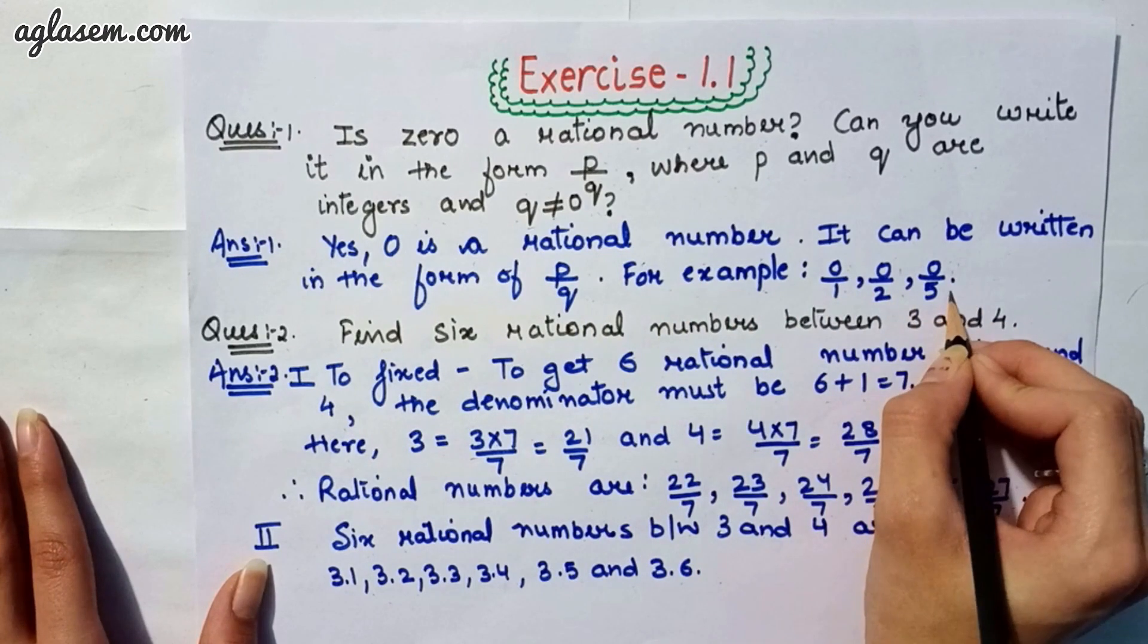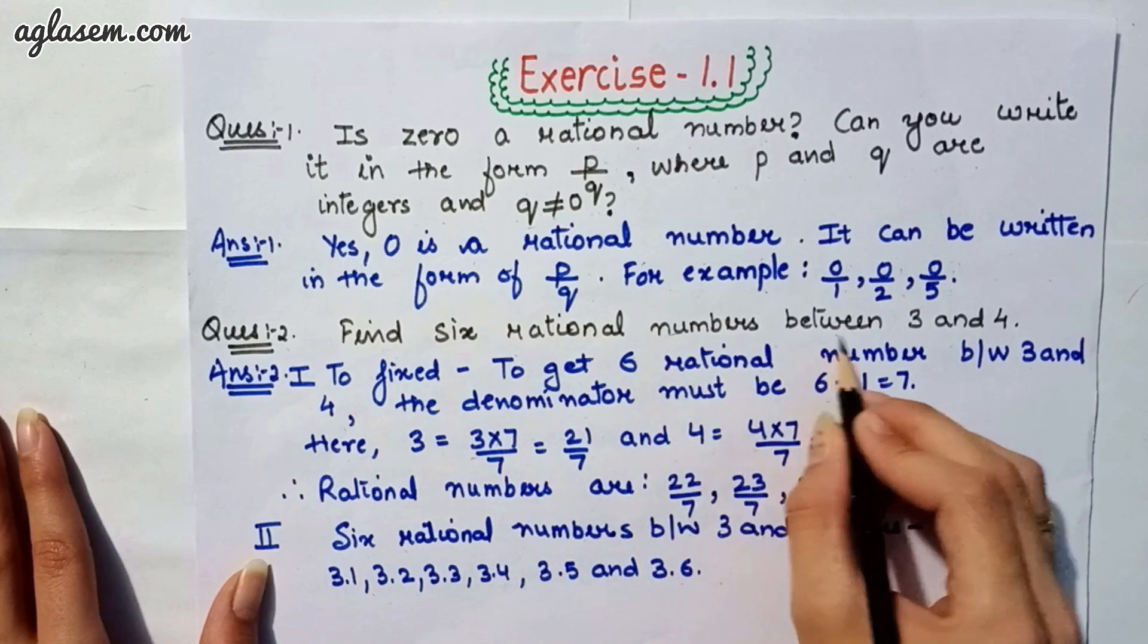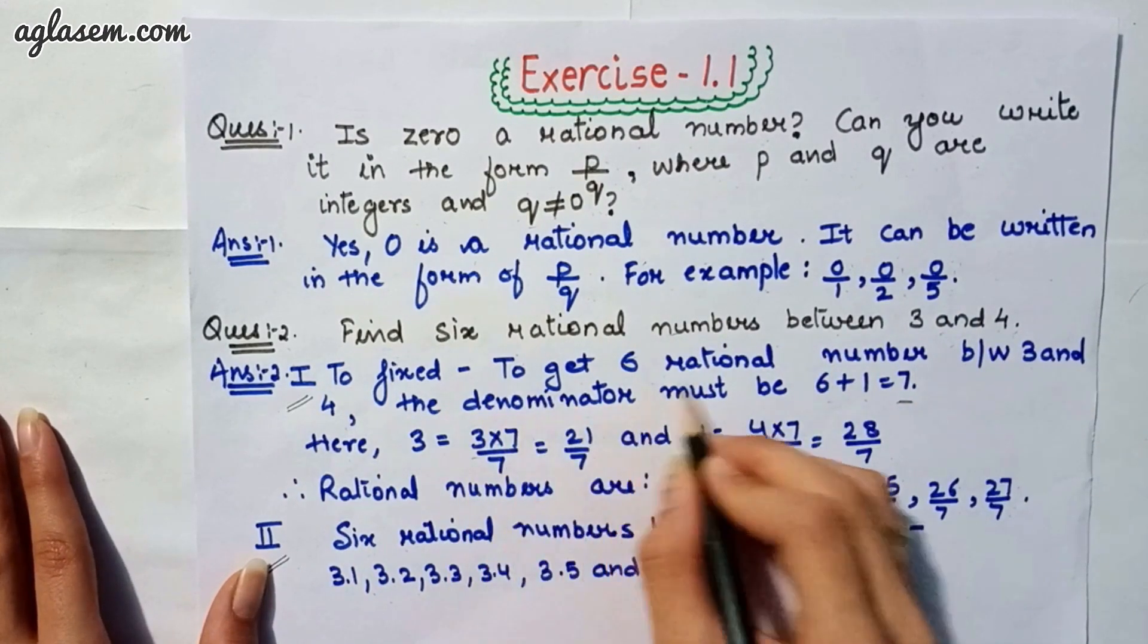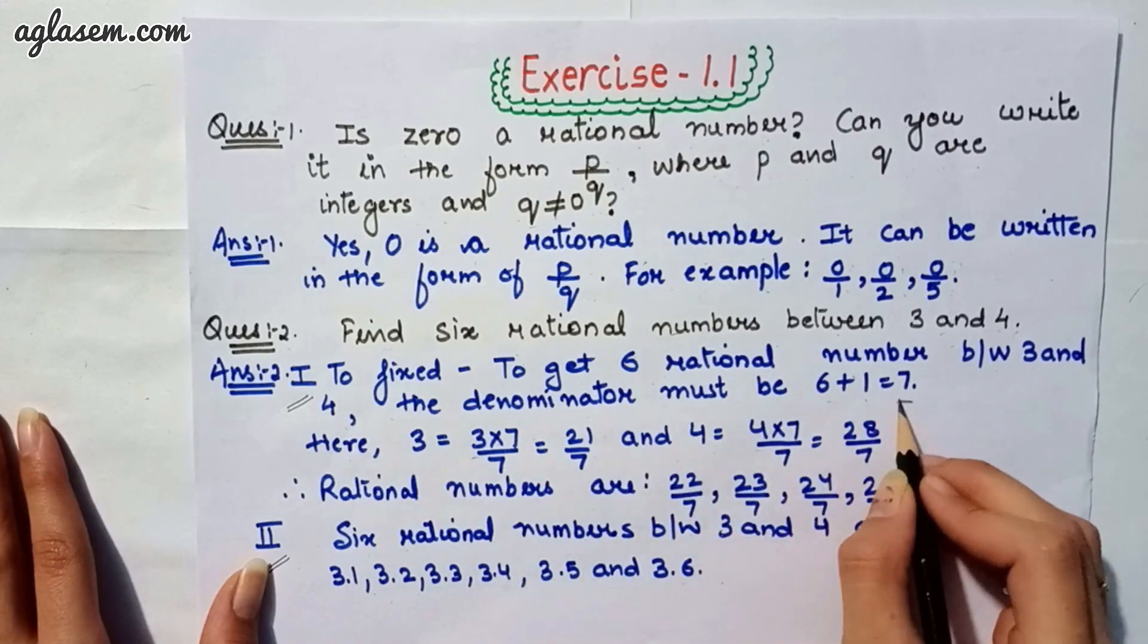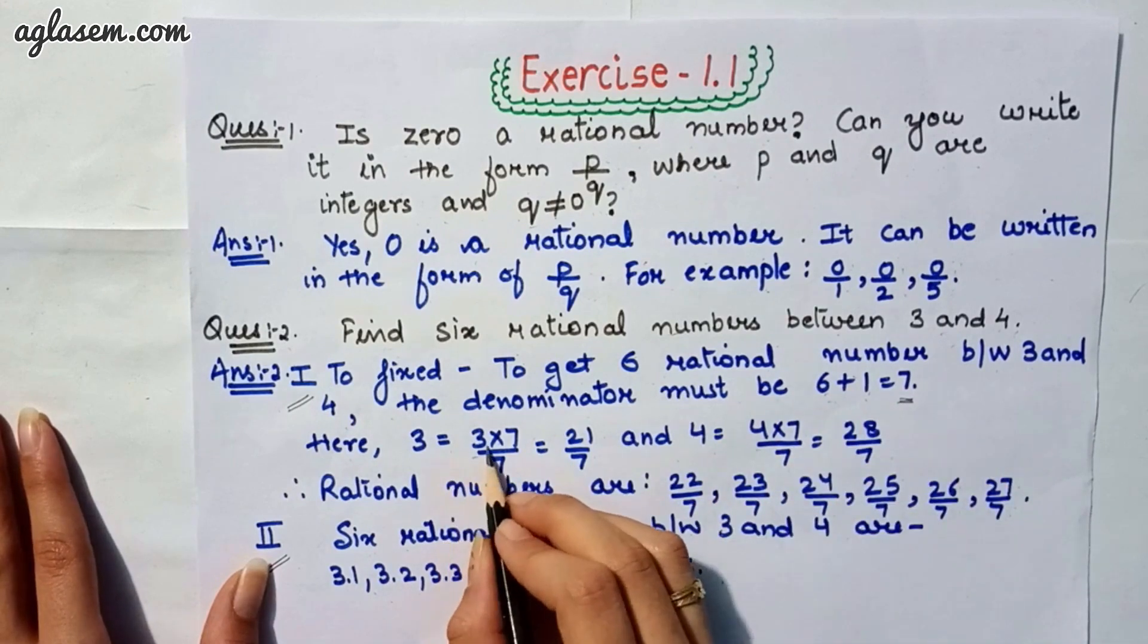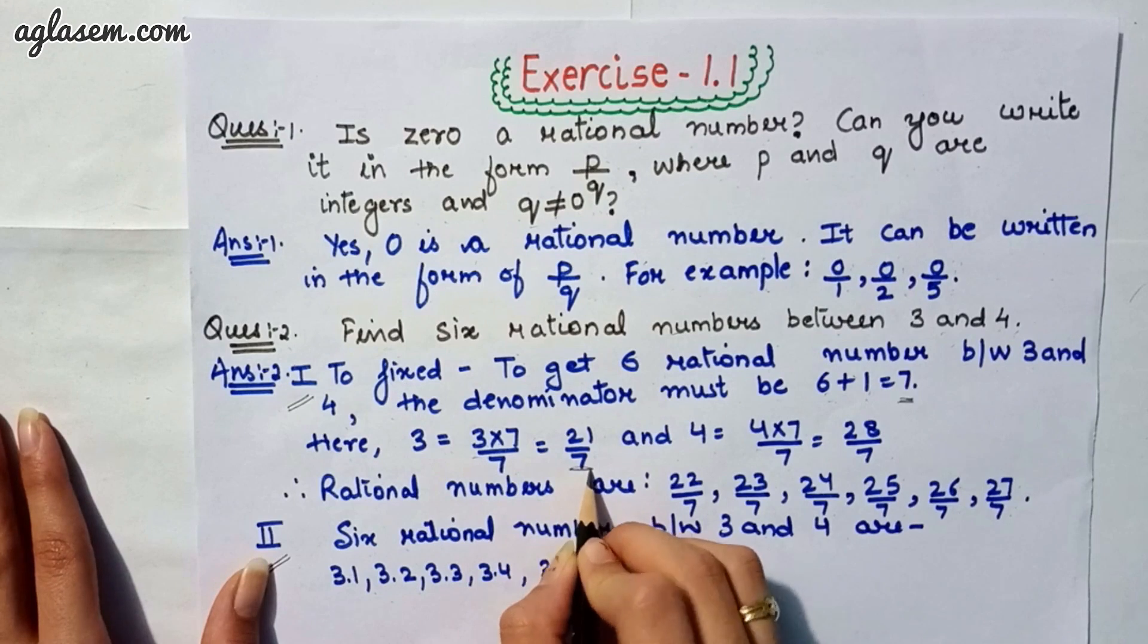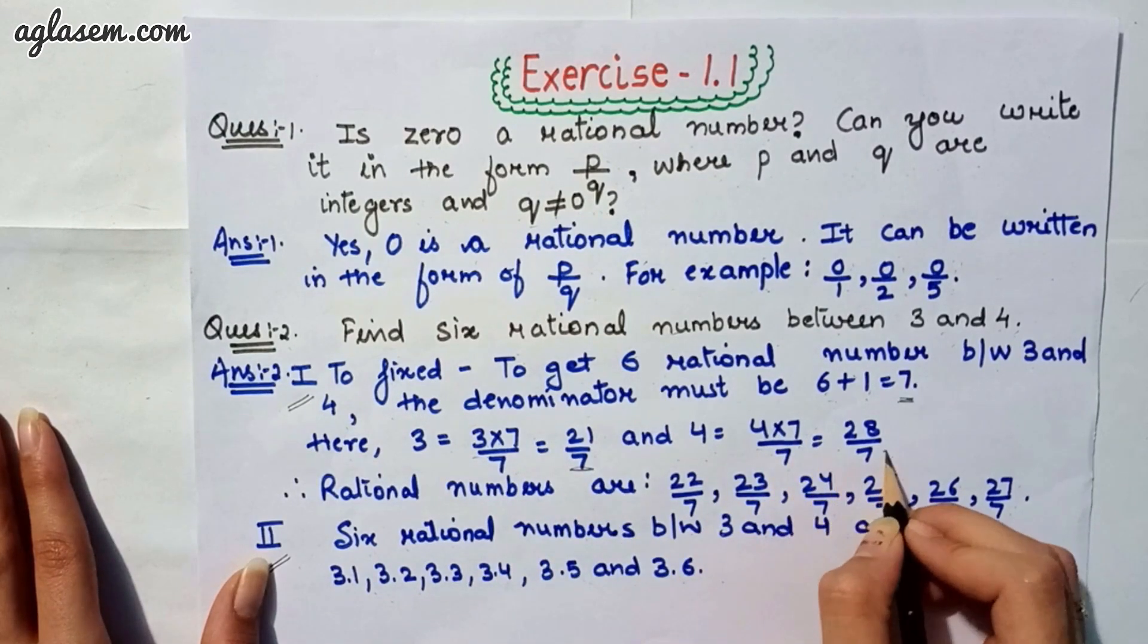Moving to our second question which says, find 6 rational numbers between 3 and 4. To get the 6 rational numbers between 3 and 4, the denominator must be 7, that is 6 plus 1. So, 3 is equal to 3 into 7 upon 7, which will give you 21 upon 7 and 4 which is equal to 4 into 7 upon 7, which will give you 28 upon 7.